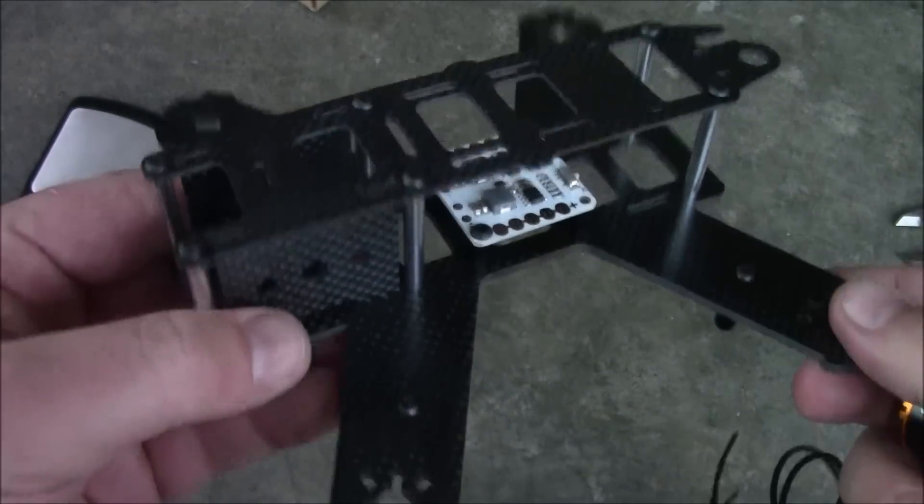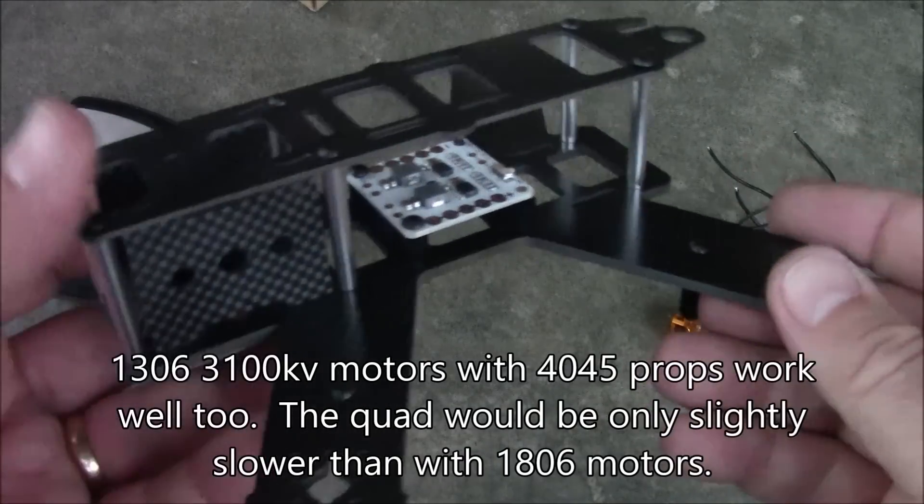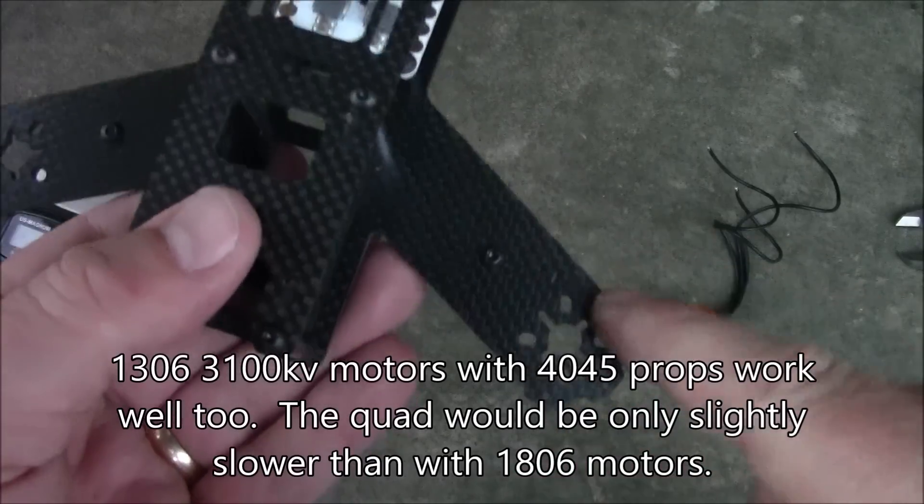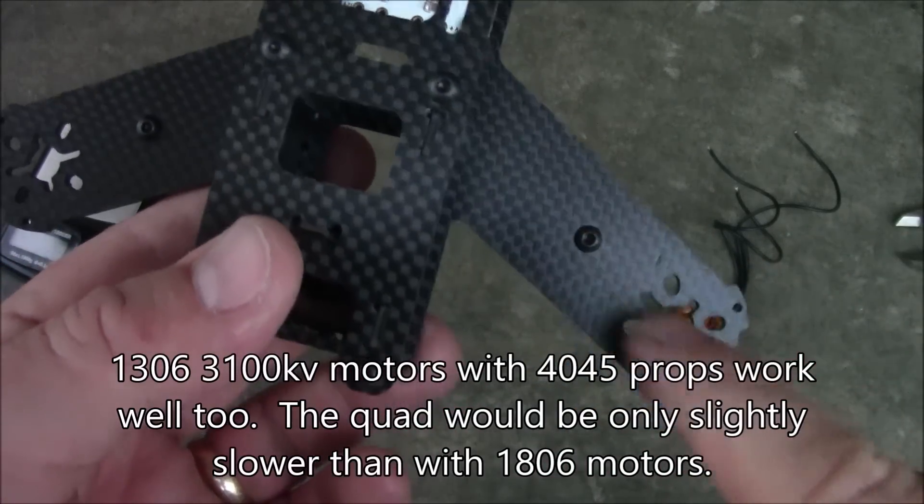But you want to get a high KV motor because these 1804, 1806 motors they can spin four inch propellers real well. If you don't have good motors on here it's going to spin these things very weak and you will not get the performance that you think you should be getting out of it.